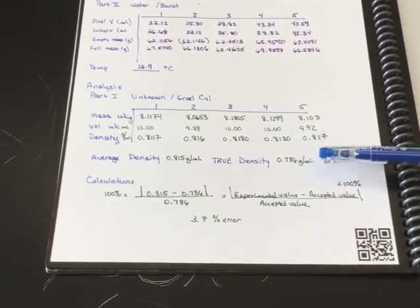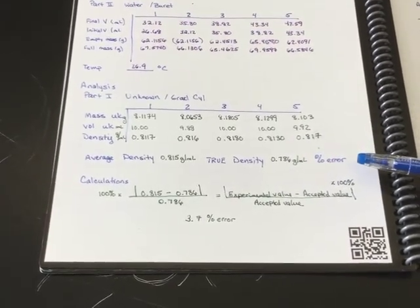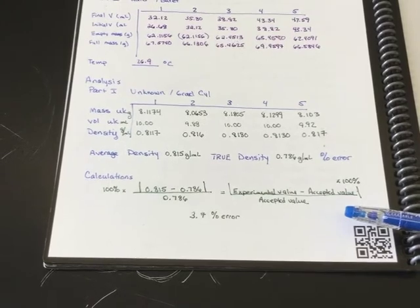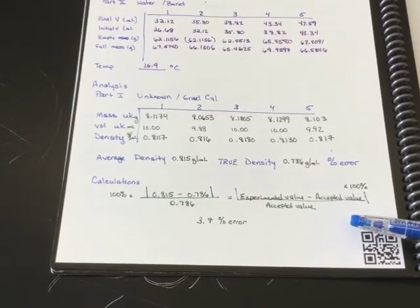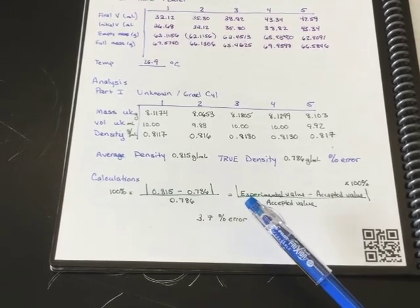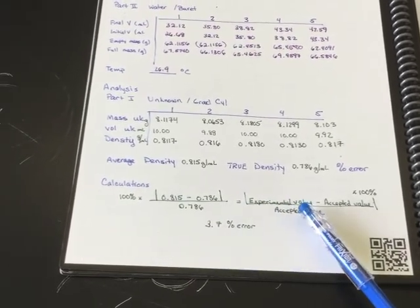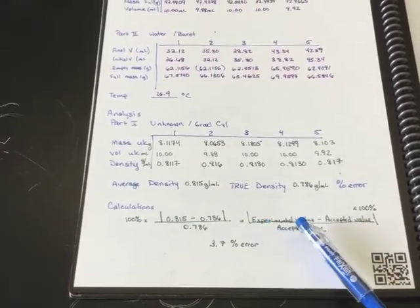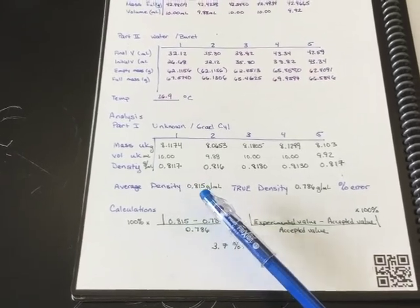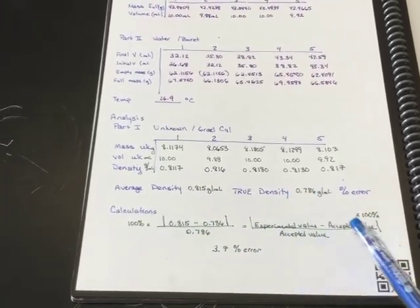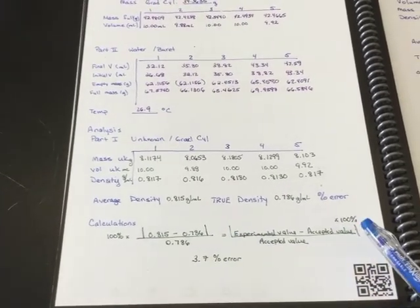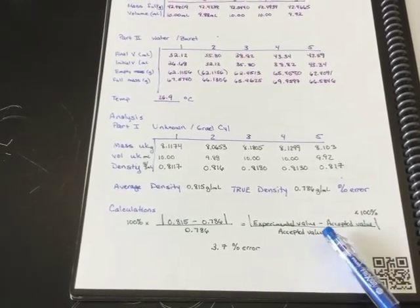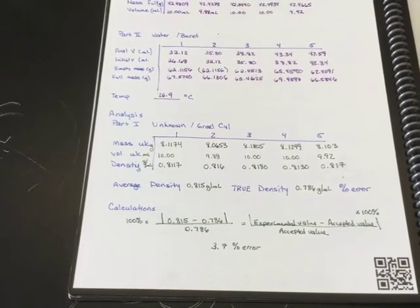Your instructor is going to ask you to calculate the percent error. They may ask you to show your calculations in your lab notebook. The directions for the lab have an error in this formula. They state instead of experimental value, they state experimental error. So you want the value of your average density minus the accepted or true density. And these vertical bars remember mean the absolute value. So we're going to take the positive value if it's negative and divide that by the accepted value and of course multiply by a hundred percent.